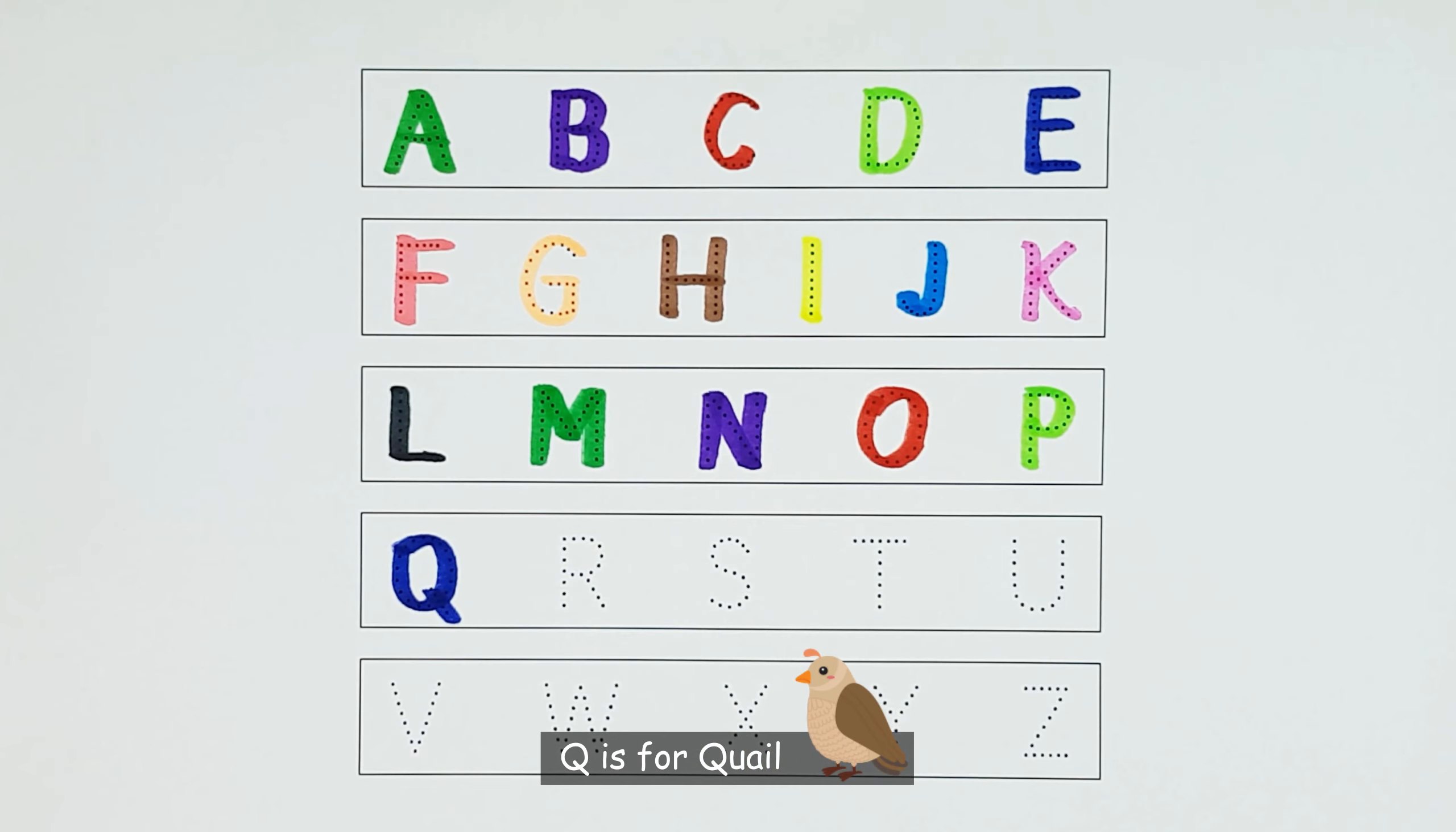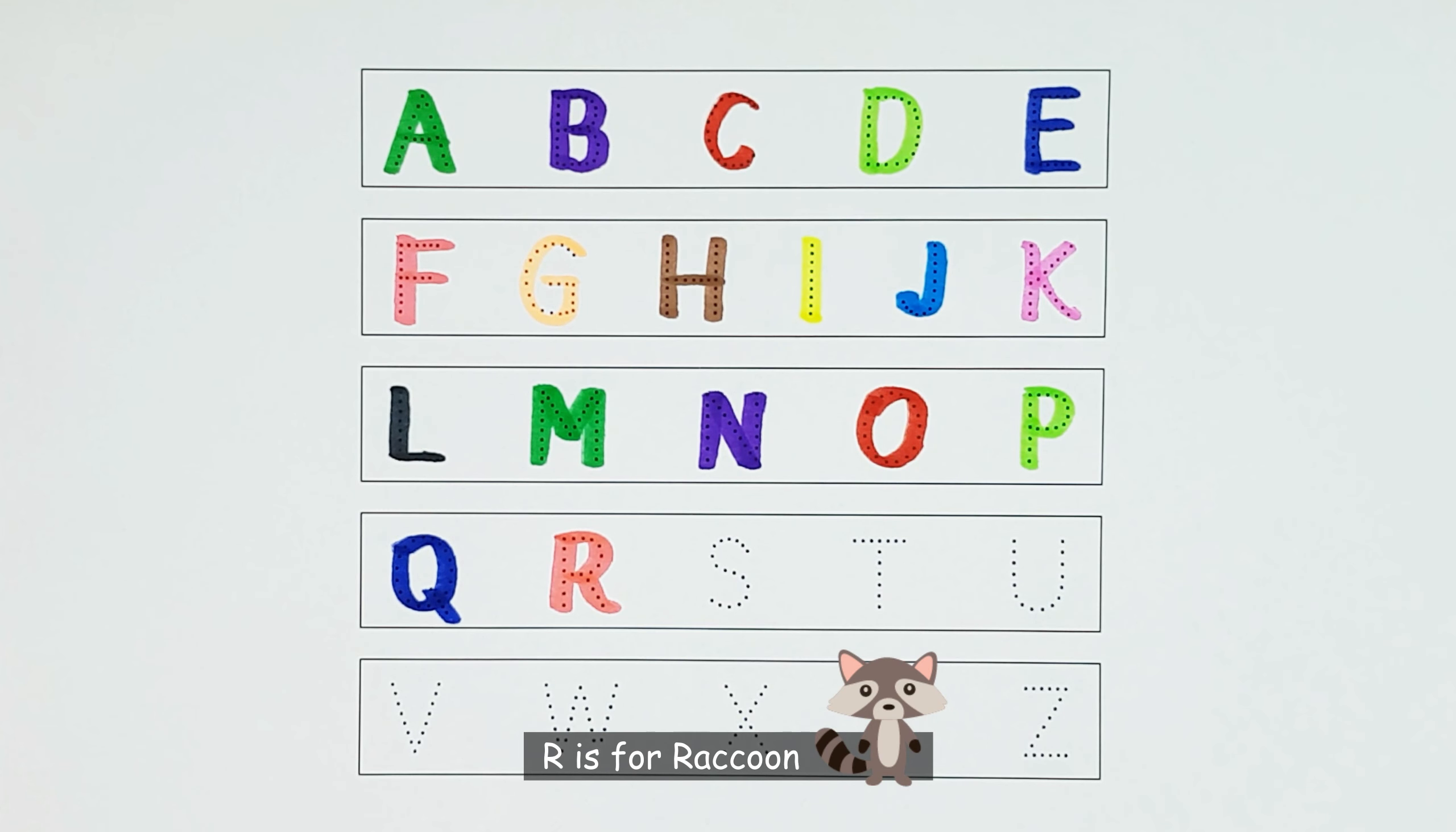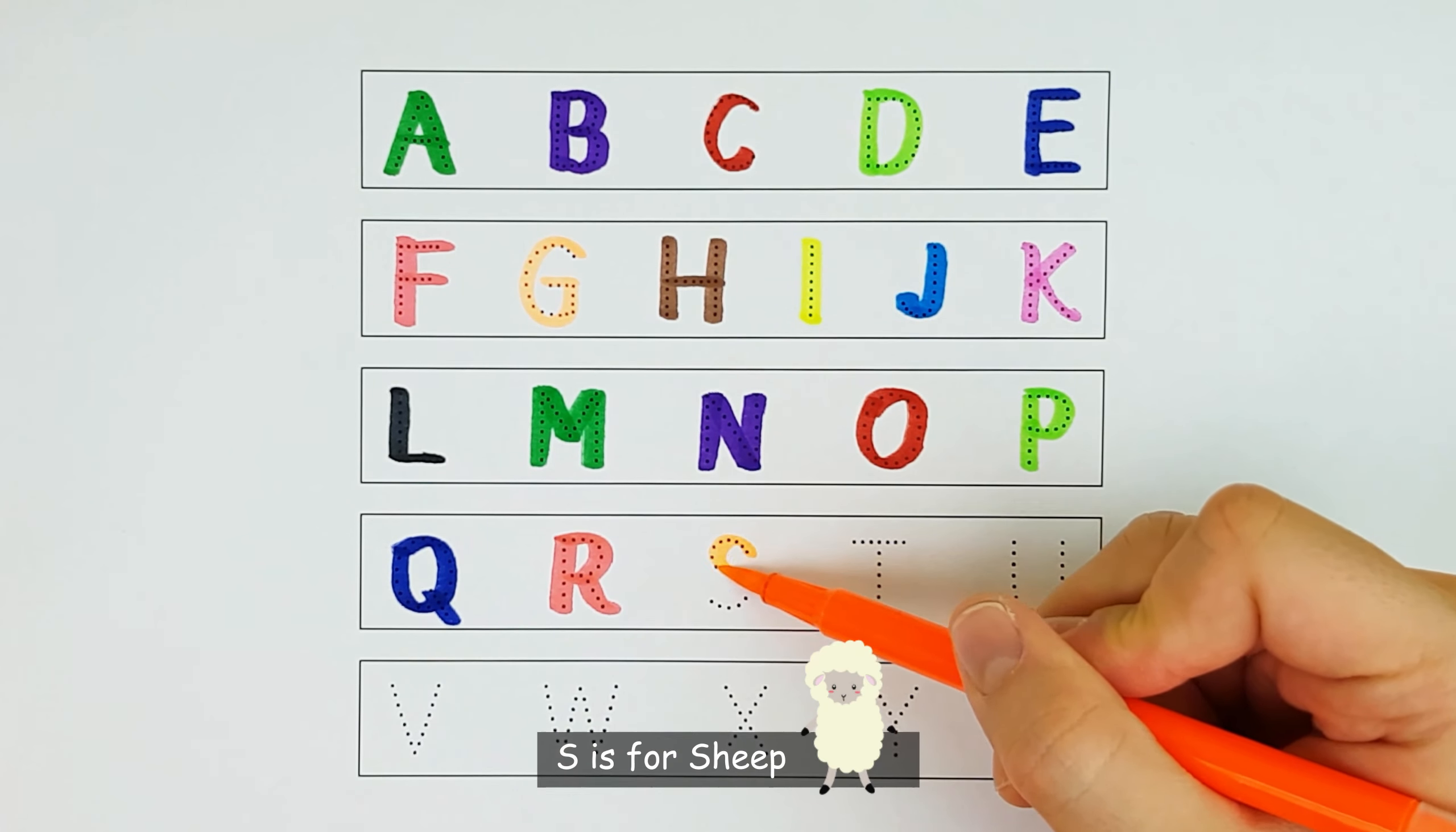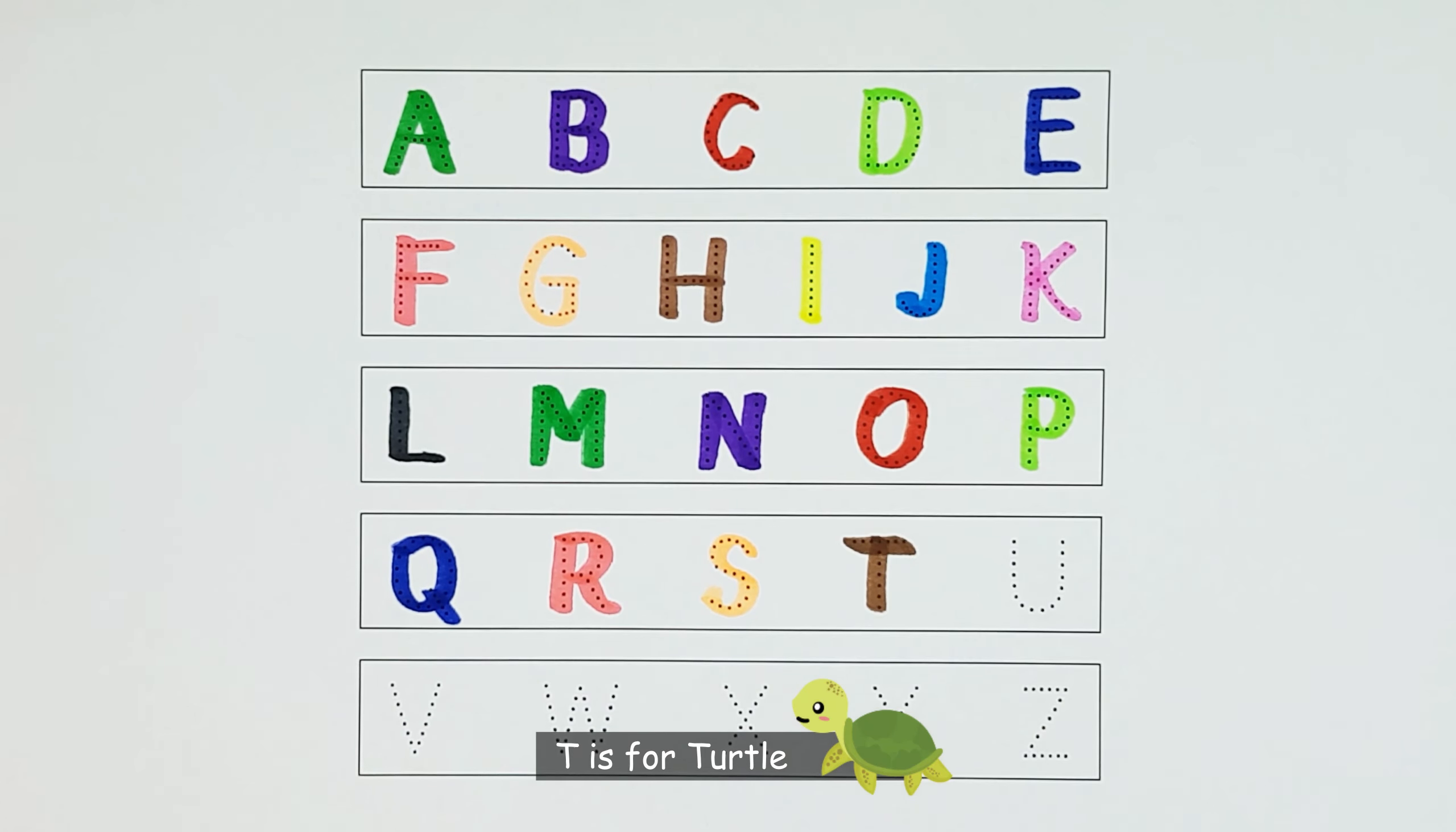Q is for quail. R is for raccoon. S is for sheep. T is for turtle.